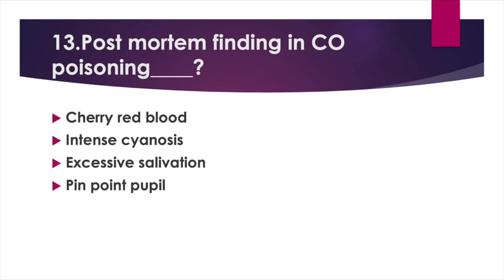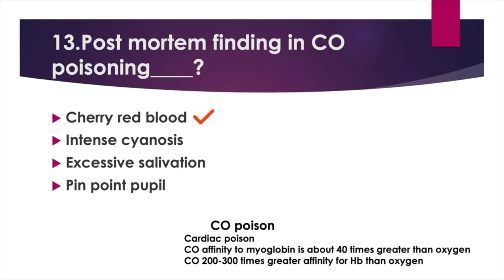Post-mortem finding in carbon monoxide poisoning — Option A: Cherry red blood, Option B: Evident cyanosis, Option C: Excessive salivation, Option D: Pinpoint pupil. Answer: Option A, Cherry red blood. Carbon monoxide is a cardiac poison. Carbon monoxide has an affinity for myoglobin about 40 times greater than oxygen, and 200–300 times greater affinity for hemoglobin than oxygen.